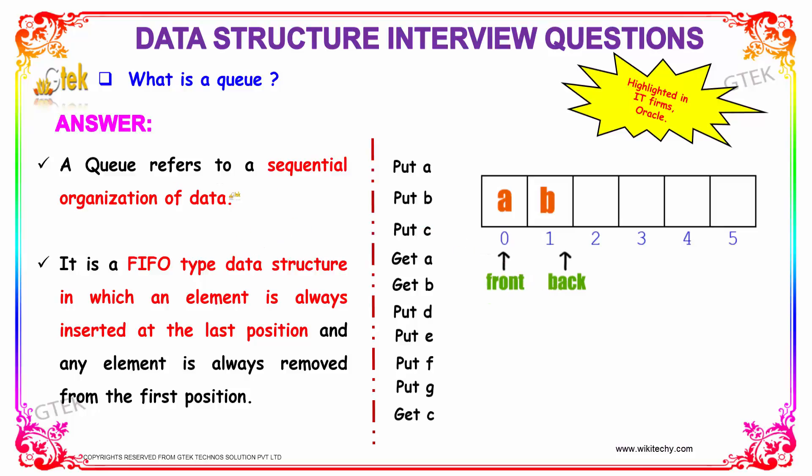What is a queue? A queue refers to a sequential organization of data. It works on FIFO type data structure in which an element is always inserted in the last position.